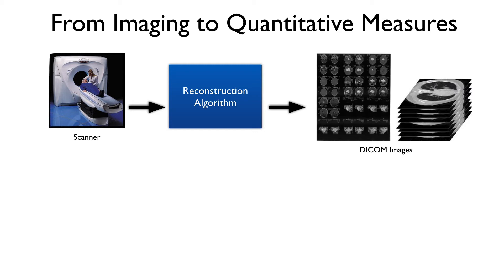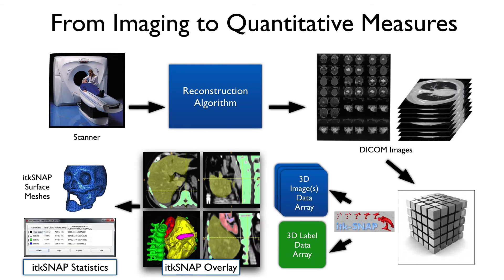The main idea with ITK-SNAP is that it's a way of going from imaging data to quantitative measures. Part of this pipeline is going from the scanner to reconstruction of images and generating image data. The other part — and that's where ITK-SNAP comes in — is to take this image information and actually produce quantitative measurements and various other things.